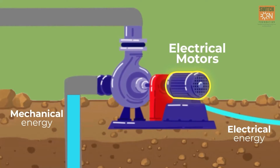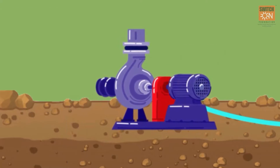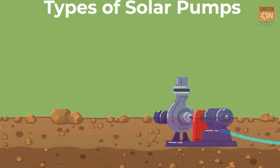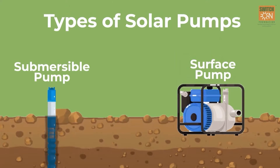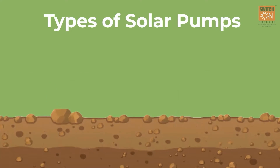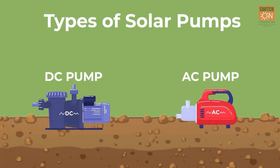Pumps can be classified in different categories: surface and submersible pumps, based on the location of the pump, and AC and DC pumps, based on the type of current utilized by the pump.